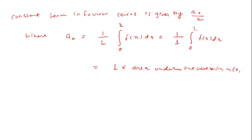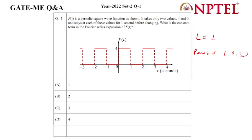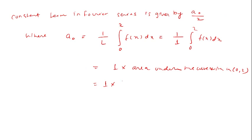Within 0 to 2, the width will be 1 and the area we can see, this is 1 and this is 4, so it would be 4 × 1. You can write it as 4 × 1, so it will be 4.